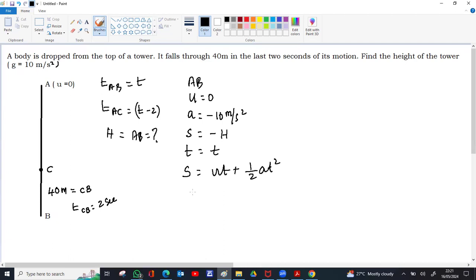So s is minus H, u is 0, half minus 10, t². We get H equal to minus minus, we get 5t². If you consider the upward as positive and downward as negative, so that is connecting H and t.